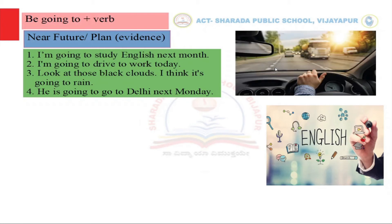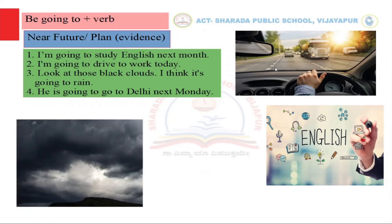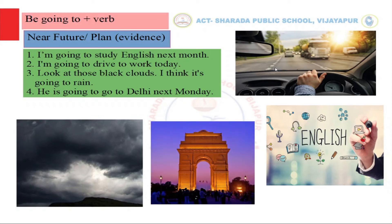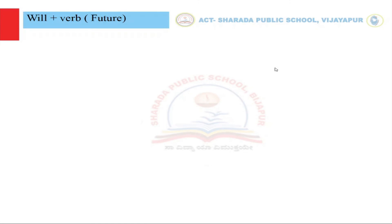'I am going to drive to work today.' 'Look at those black clouds — I think it's going to rain.' This is a good prediction because we see clouds in the sky; there is a lot of evidence. Another example: 'He is going to go to Delhi next Monday' — this means you have probably already bought your ticket and are pretty sure. There is not a lot of confusion, so 'be going to' reflects certainty with evidence.